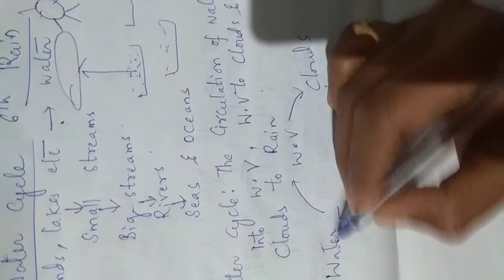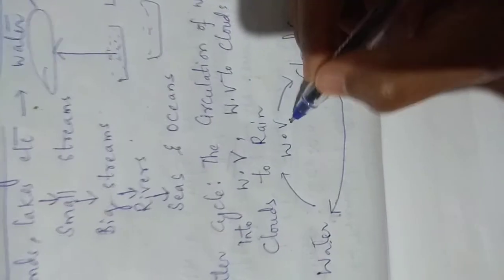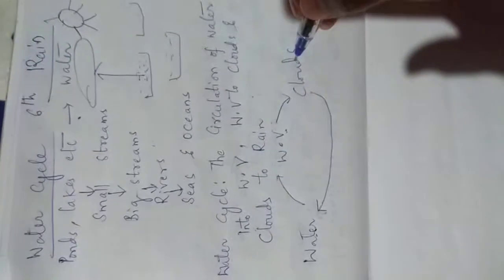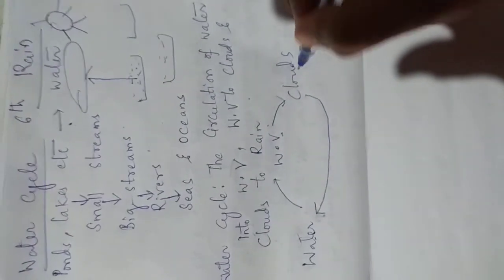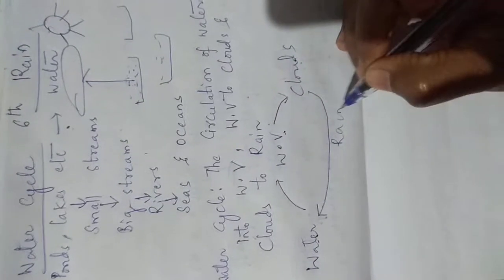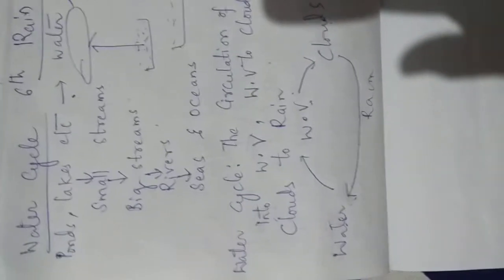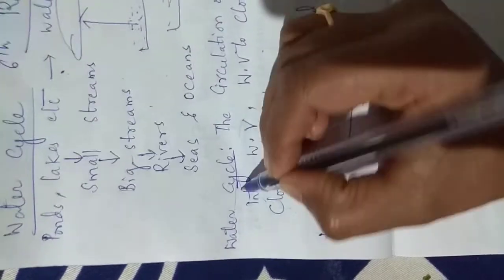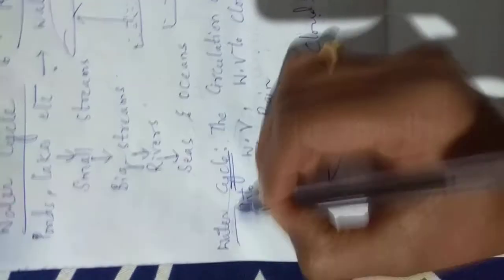Water vapour cools down to form clouds. Clouds again cool down to form rain. And rain is nothing but water. And this will be continuous. That's why it is called a cycle.